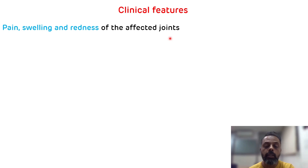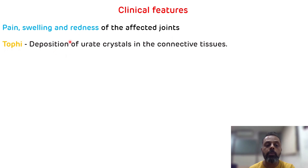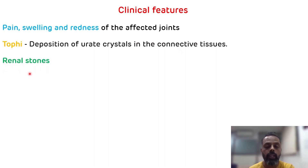Now we will see the clinical features. Gout is characterized by redness, swelling, and pain of affected joints, particularly the peripheral joints, and the first metatarsophalangeal joint will be affected first — that is the great toe. It also leads to tophi, that is deposition of uric acid crystals in the connective tissues, and it can lead to renal stones, which occurs due to decreased solubility of uric acid. These are the clinical features of gout.